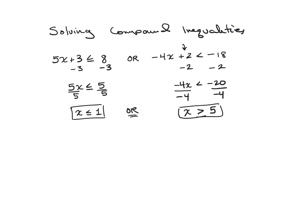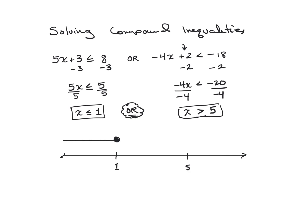The word OR is important because it helps determine what the final solution looks like on a number line. The two key values are 1 and 5. Above 1, I put a closed circle because of the less than or equal to, and I shade to the left since x is less than or equal to 1. Then at 5, I put an open circle and shade to the right, since x is greater than 5.